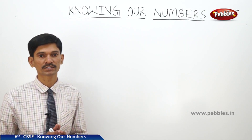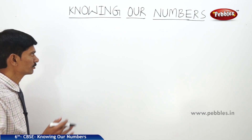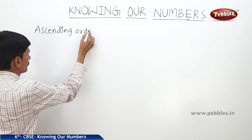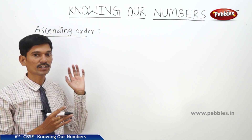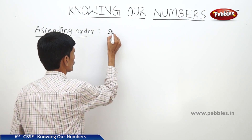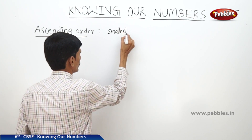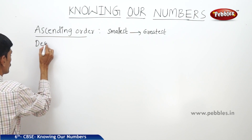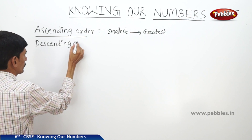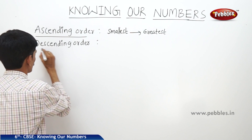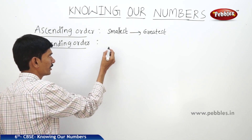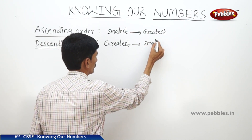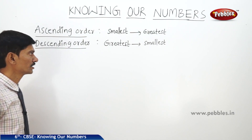Next, how to arrange the given numbers either in ascending order or in descending order. So first, what is ascending order? Ascending order means arranging the numbers from smallest to the greatest. Then, descending order means arranging the given numbers from the greatest number to the smallest number. This is the descending order.